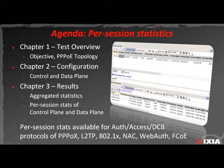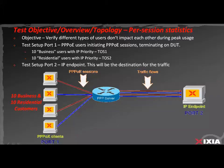This feature is not only available for PPPoE, which is our example, but also for other protocols available within the authentication, access, and data center bridging folders within the ixNetwork application. Those protocols include PPPoE, L2TP, 802.1x, NAC, web authentication, and fiber channel over Ethernet.